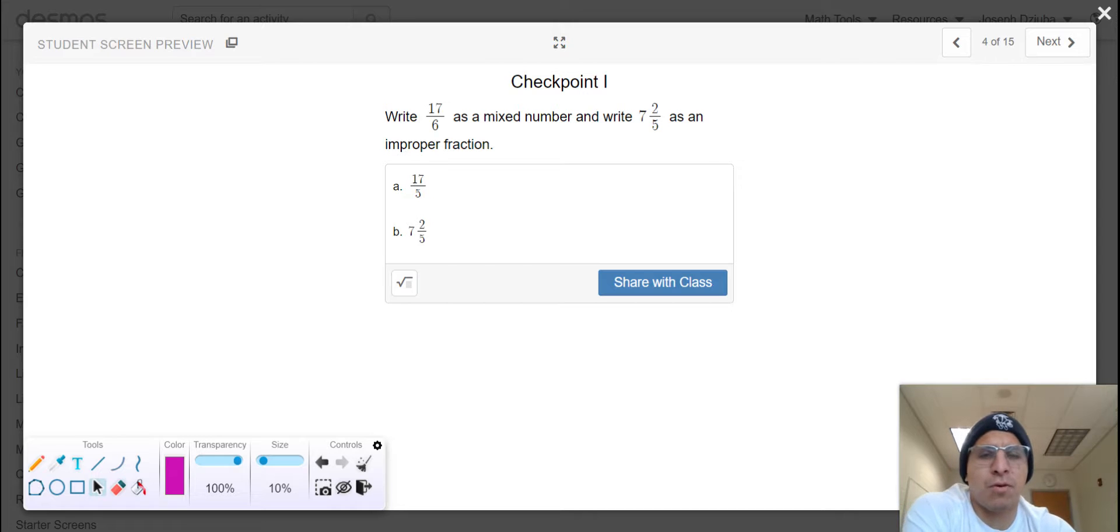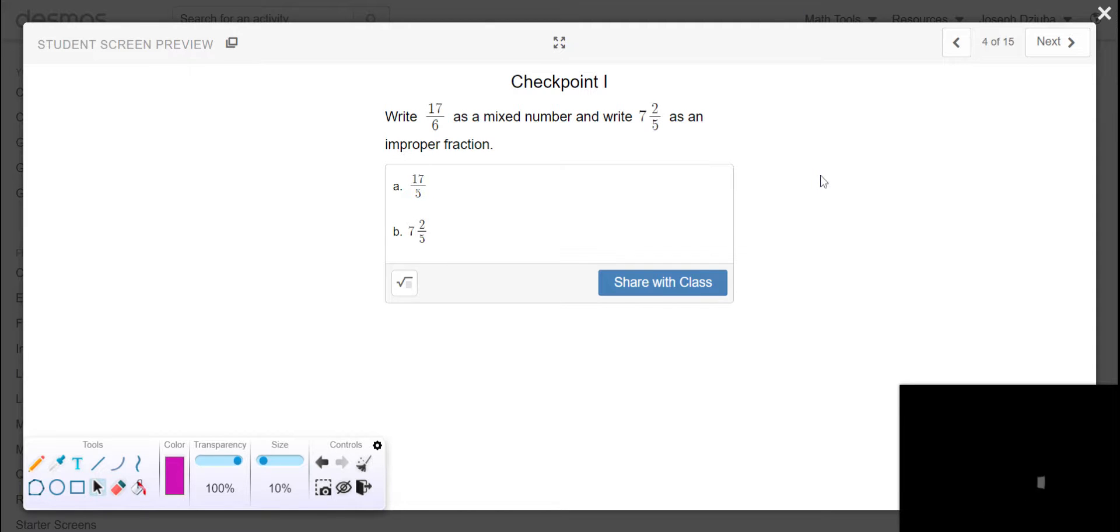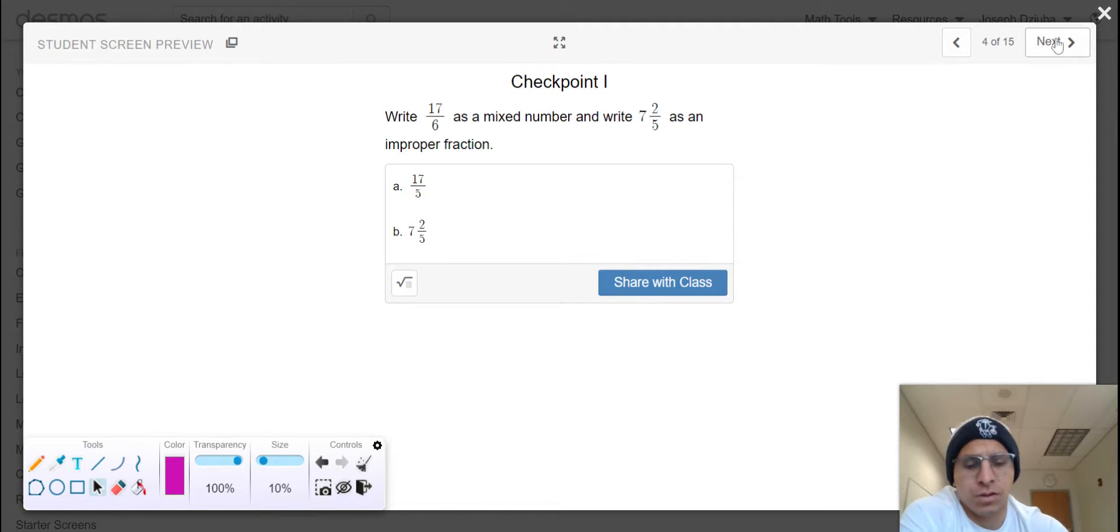In checkpoint one I asked you to perform a skill that you should have mastered by this point, right? Rewriting 17 sixths, even though it says 17 fifths, that's awkward, as a mixed number and write seven and two fifths as an improper fraction. If this is something that you still have not mastered or are unsure of, don't hesitate to ask for us to review this while we're in class together, but that is something I will definitely leave for you as I am confident you should have learned it by this point.